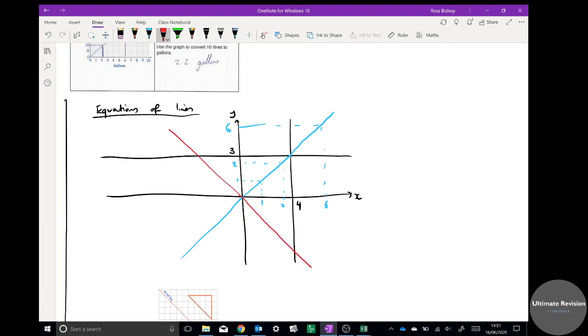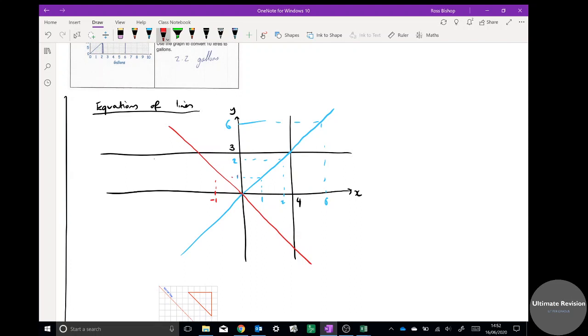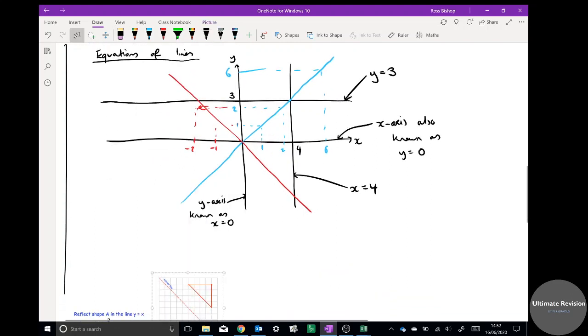And the final one you really need to know is this line. This one would be like (-1,1), (-2,2), passes through those points. So we've got those four lines, we need to know the equations of those. This line here, the horizontal line, any horizontal line passing through y is y = 3. Don't get confused with x = 3. Any horizontal one is y = 3. So actually this line here, the x-axis, is also known as y = 0. Vertical lines: this one, if it's passing through 4, that will be x = 4. And if we look at the y-axis, the y-axis could also be known as x = 0.